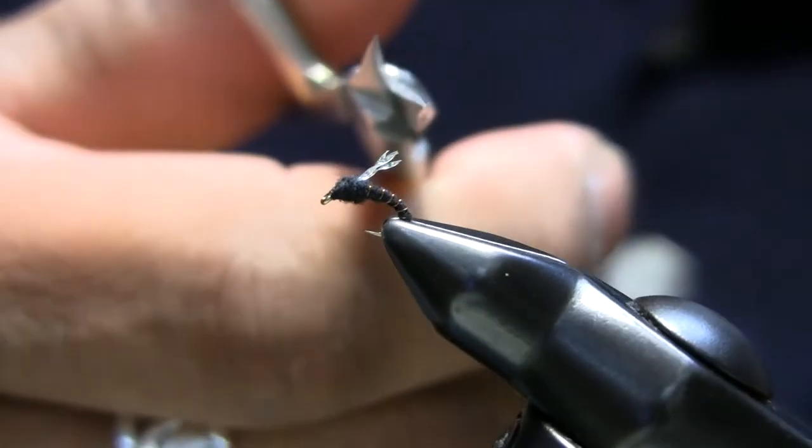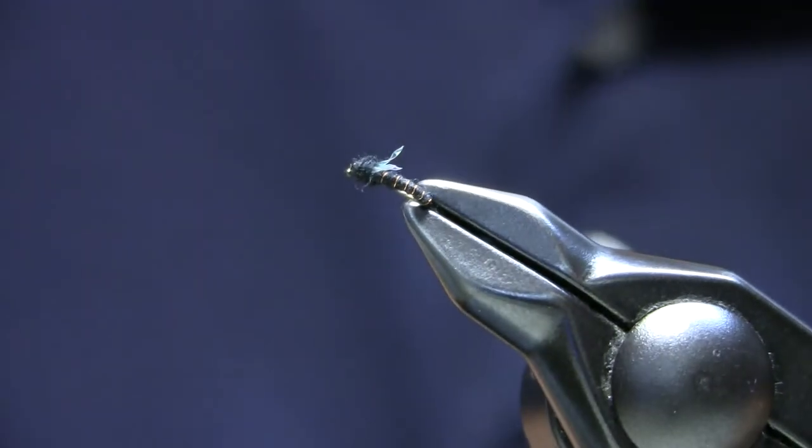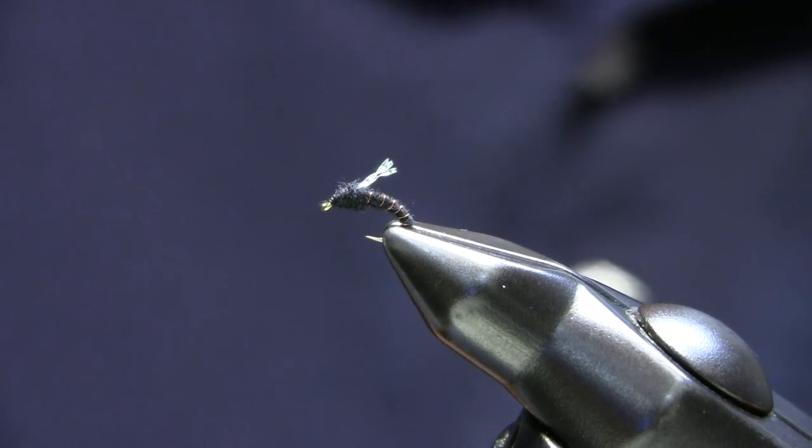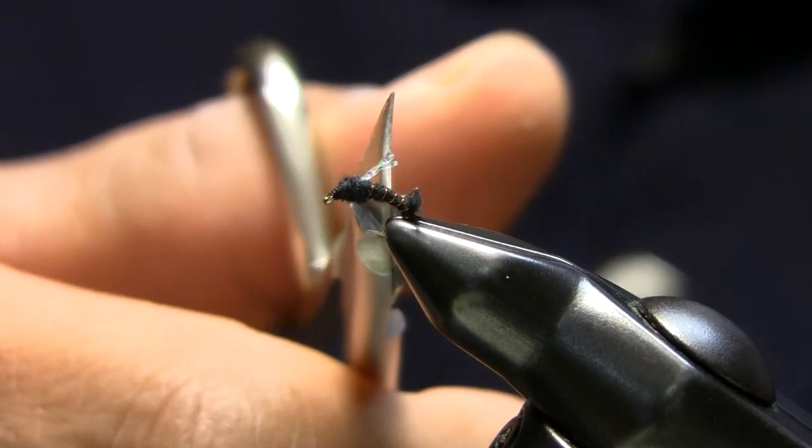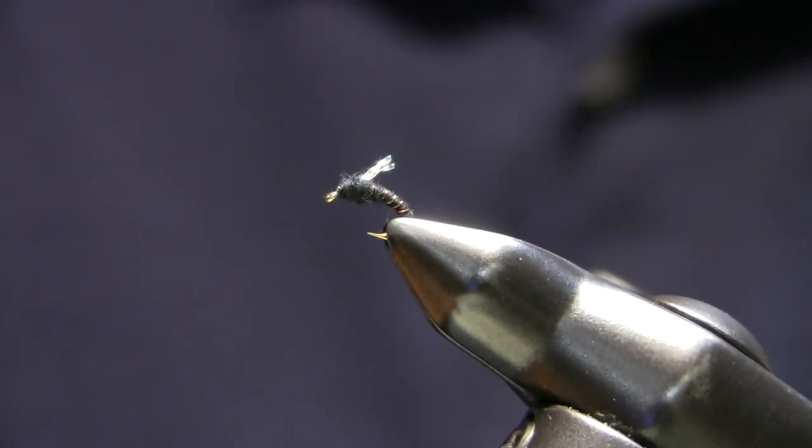And if you need to, as you're fishing, you can cut them down a little bit further if you need to. So that's the black color. You can also tie them in chocolate, the two that I usually use most of the time. And it's a size 20 KF merger.